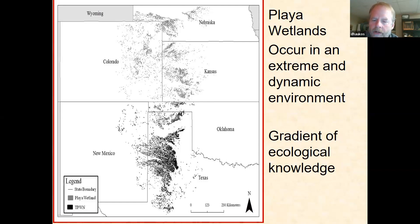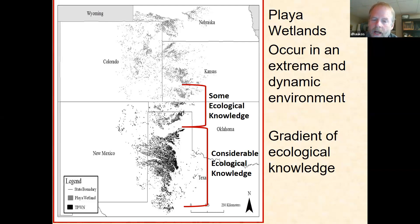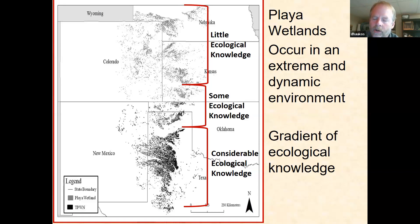Across the area of the playas, we have a large gradient in terms of ecological knowledge. On the southern high plains, we've been researching playas from an ecological perspective since the 1970s and have considerable knowledge of these systems. In the central high plains, we have some ecological knowledge, though those systems differ quite a bit from the southern high plains. In the northern high plains — central and northern Kansas, eastern Colorado, and southern Nebraska — there hasn't been a lot of study. These are tiny playas in most cases, and there's just not a lot known about how they work.